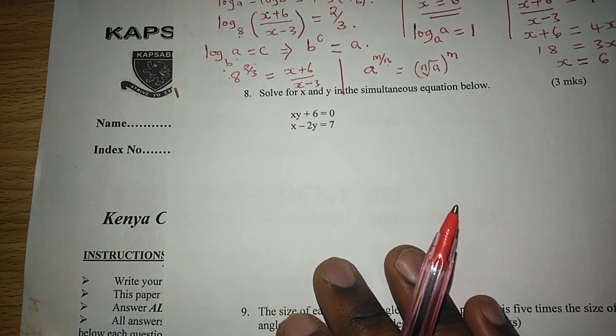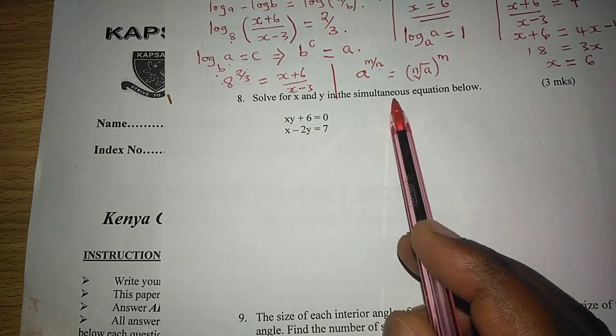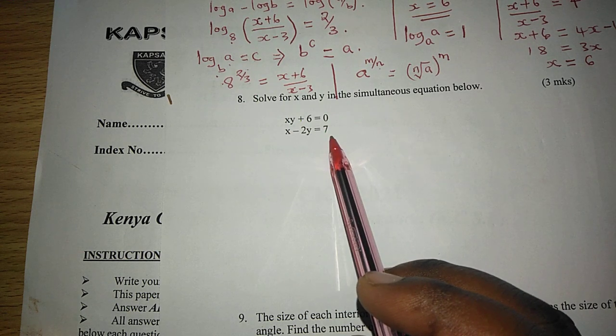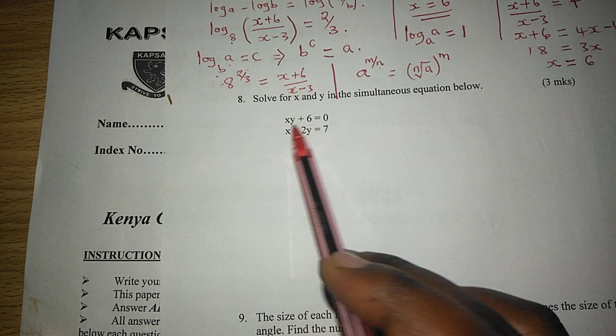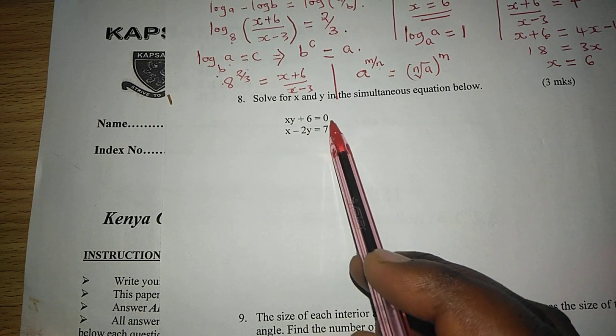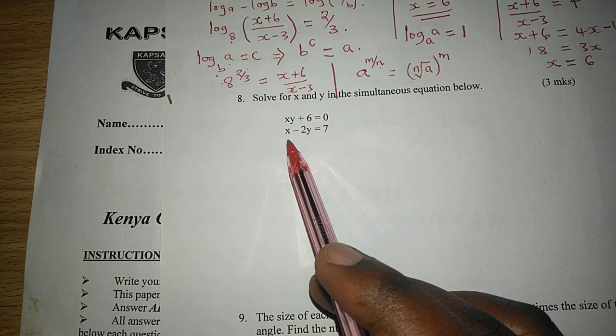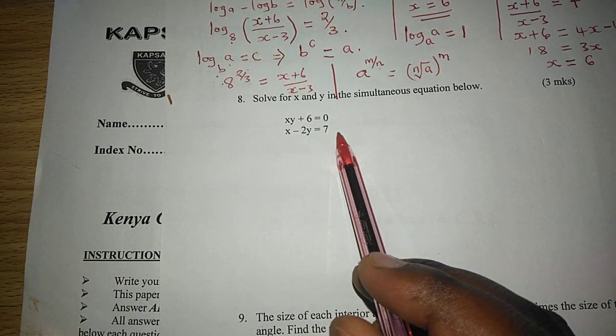We can proceed to the solution of the equation whereby we try to solve for x and y in the simultaneous equation below. Examining the pair of two equations here, we can check x times y plus 6 equals to 0, and again we have x minus 2y equals to 7.